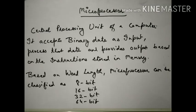This is a very basic topic about computers. The function of the CPU is: it accepts binary data as input, processes that data, and provides output based on the instructions stored in memory. Word length means how many bits the microprocessor can process at one time — 8 bit, 16 bit, 32 bit, 64 bit microprocessors exist. A 64-bit microprocessor means it can process 64 bits of information at a single time.